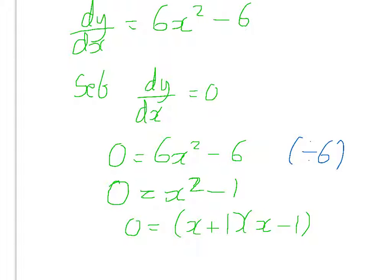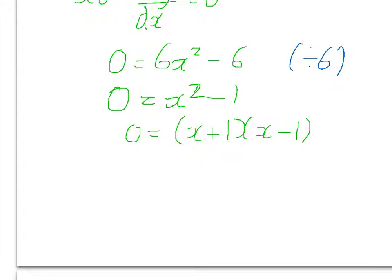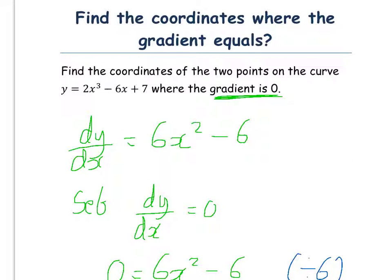So this means that our two solutions here for the x coordinate are x equals minus 1 and x equals 1. This isn't quite completing the question because the question asks for the coordinates of the two points.